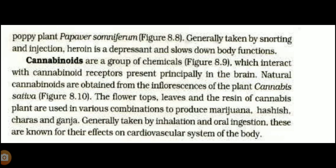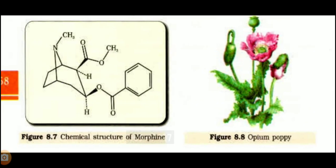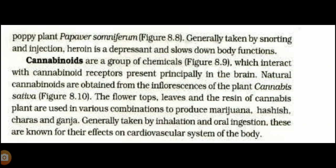Morphine is extracted from the poppy plant, scientifically known as Papaver somniferum, commonly called afeem. This is the chemical structure of morphine. Morphine itself is used as a medicine — it's not bad — but excessive use of morphine as a drug is harmful.